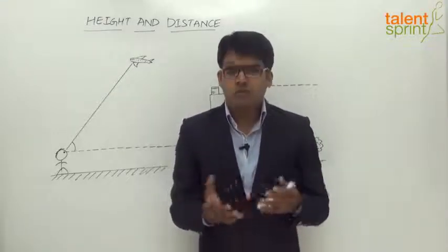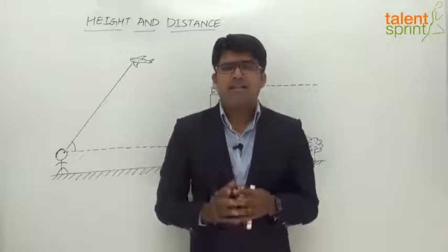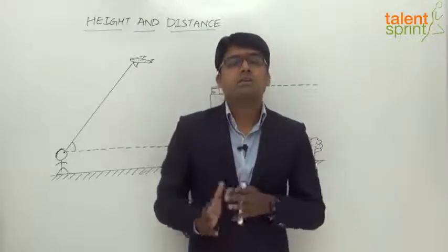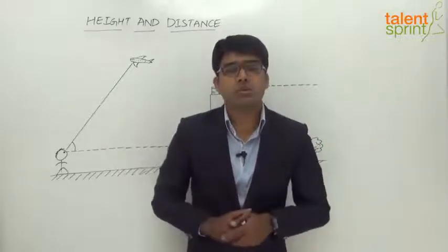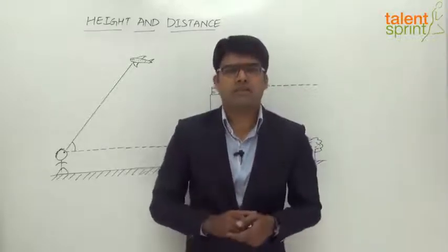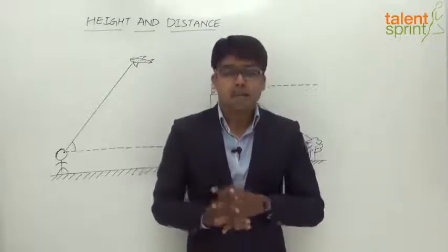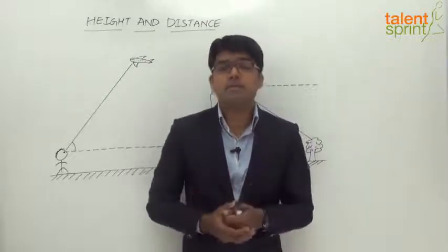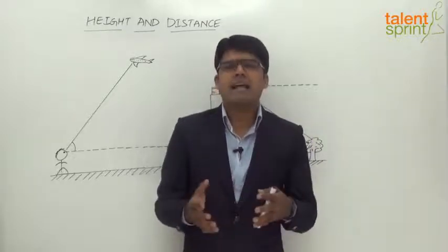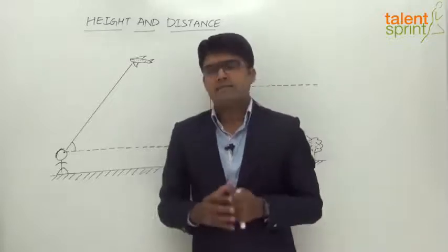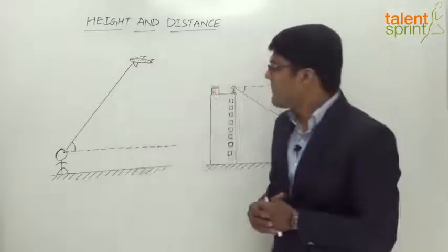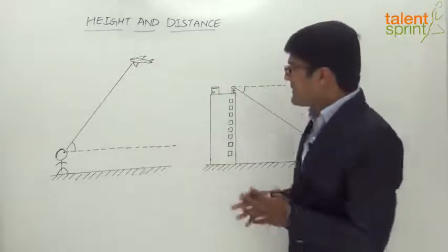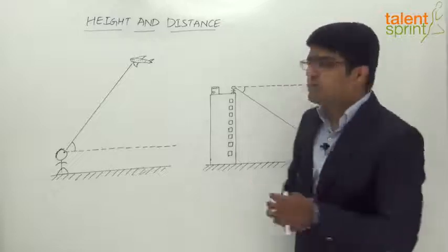Before we look at a few examples, let us understand the terminology used in this topic — terms like line of sight, angle of elevation, and angle of depression. I shall explain these with the help of a few illustrations as you can see on the board here.